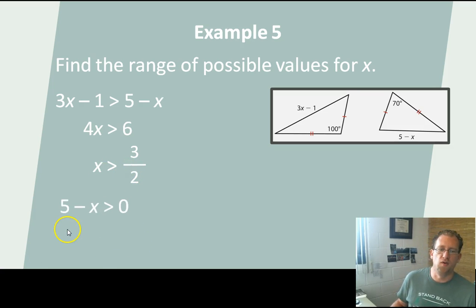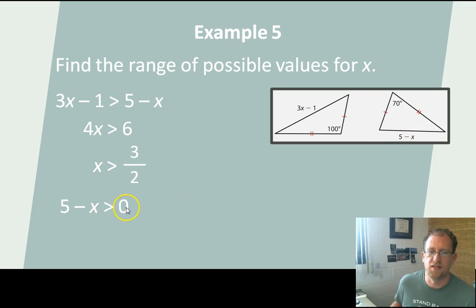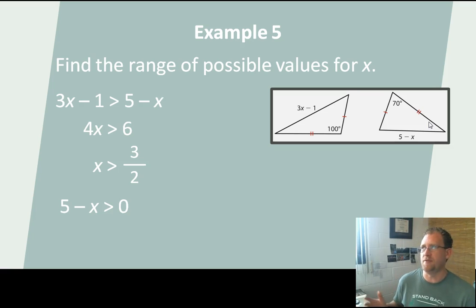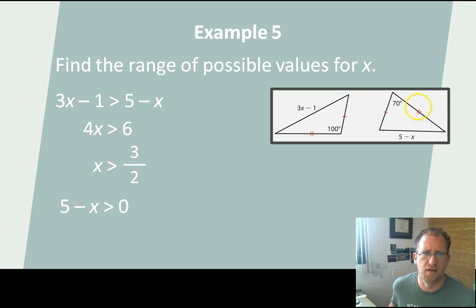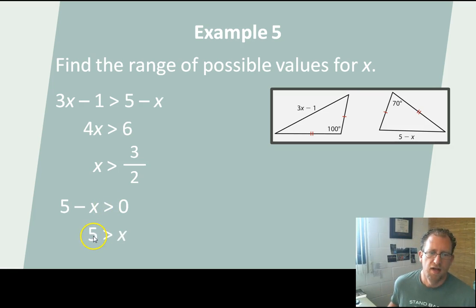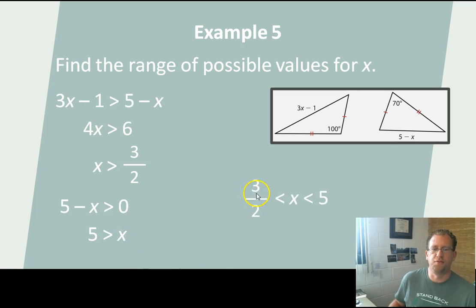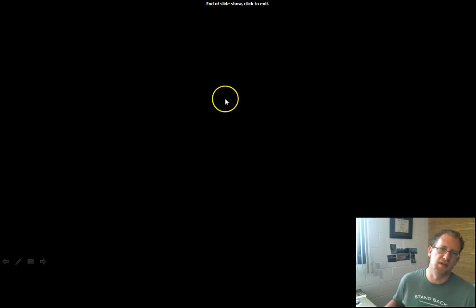6 divided by 4, simplified, left as a fraction — x is greater than 3/2. And then we're also going to say that 5 minus x is greater than 0, because this is a real measurement — it's a distance, and distances can't be 0 or negative in this example. So solving for x there: 5 is greater than x. So now, 3/2 is less than x and x is less than 5 — or equivalently, 5 is greater than x which is greater than 3/2. That is an example of some of the stuff you will be facing in class.